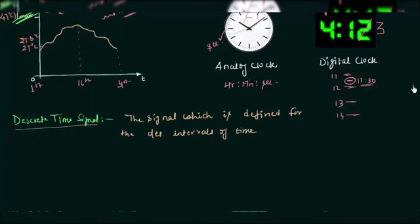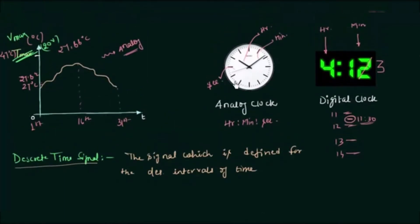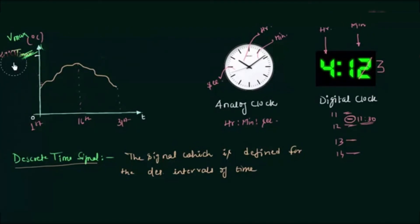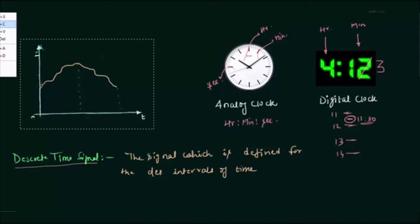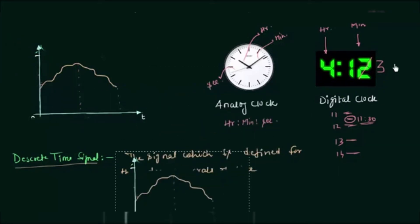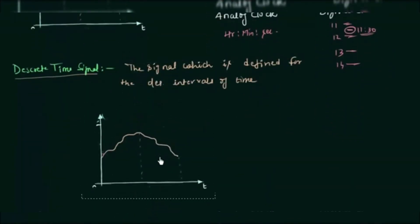Let's understand the discrete time signal with the help of a graph. In a discrete time signal, the time axis — the x-axis — is discretized.